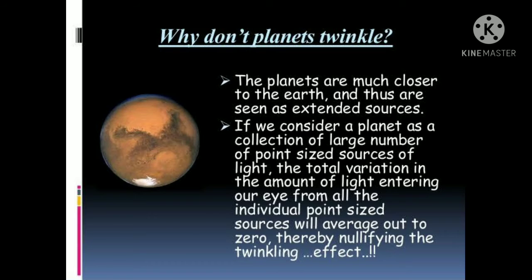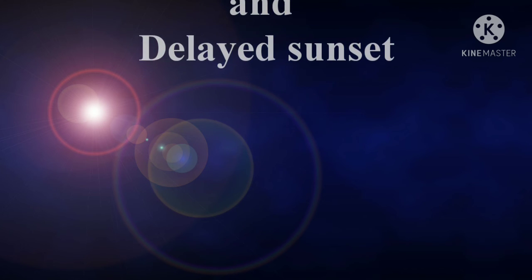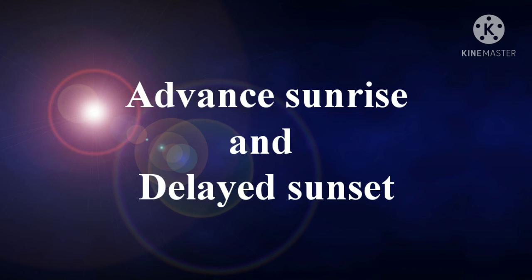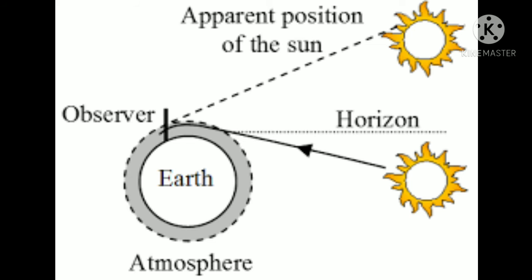The next example is advanced sunrise and delayed sunset. The sun is visible to us about two minutes before the actual sunrise and about two minutes after the actual sunset. For example, if you see sunrise at 5 a.m., the actual sunrise happens at about 4:58 a.m. — two minutes earlier — due to atmospheric refraction.